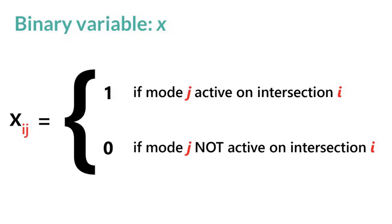Every QUBO problem needs a binary variable so we define our binary variable to be x_ij. x_ij is one only if mode j is active on intersection i. j runs from one to six as there are six modes. And in every other case, x_ij is zero.